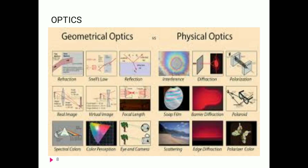Some pictures illustrate both geometrical optics and physical optics. In geometrical optics, we have refraction, reflection, Snell's law, virtual image, real image, focal length, spectral colors, eye, and corona. In physical optics, we study interference, diffraction, polarization, soap bubble with seven colors, Bragg's diffraction, Polaroids, and scattering. Geometrical optics explains how light rays travel through a medium or through space, while physical optics covers wave-based phenomena.